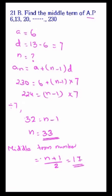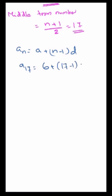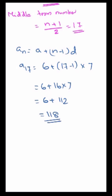The 17th term is the middle term. Using the formula AN equals A plus N minus 1 into D, we get A17 equals 6 plus 17 minus 1 into 7. That is equal to 6 plus 16 into 7, which is 6 plus 112, equal to 118. So the middle term of the AP is 118.